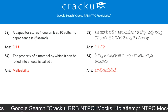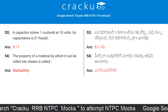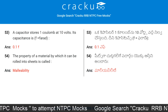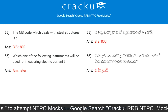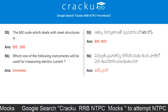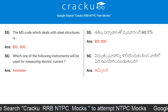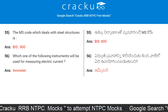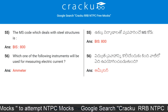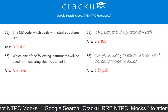The property of a material by which it can be rolled into sheets is called malleability. The IS code which deals with steel structures is IS 800. Which instrument is used for measuring electric current? Ammeter.